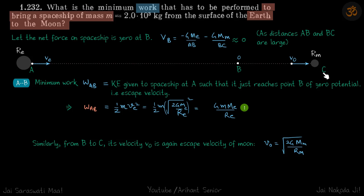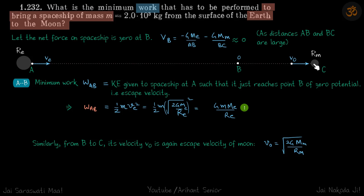In order to do that, for the whole path from A to C, what should be the minimum work done? We are going to break this journey into two parts — up to the point where the net gravitational field is zero. If you launch it with sufficient velocity that it just reaches this point, after that it will be captured under the Moon's gravitational field, and once it is near the surface we release gases to slow down the spacecraft so it lands softly on the Moon.